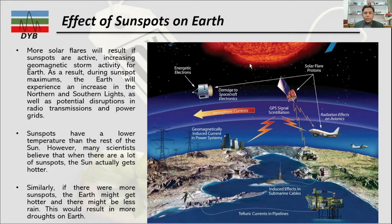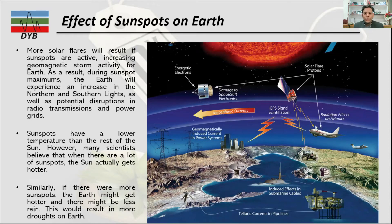As a result of sunspot activity, the earth experiences an increase in northern and southern lights, as well as disruption in radio transmission and power grids. It can also cause damage to spacecraft electronics, and the solar flare protons affect transmissions used for air travel — including radiation effects on avionic systems.